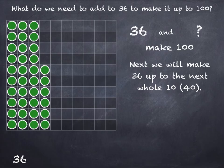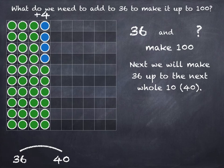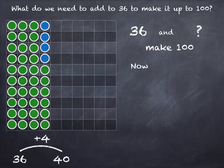6 and what make 10? We need to add on 4. 36 plus 4 takes us to 40, and now we'll go from 40 up to 100 in tens.